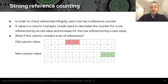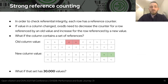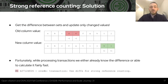The next topic is referential integrity, specifically strong references. For them it's enough to keep a reference counter per row. If a reference value changes, OVSDB decreases the counter for the old referenced row and increases it for the new one. If the column contains a set of references, it decreases the counter for all references in the old version of the set and then increases for all references in the new version. This is inefficient when a set has many values but only a few changed. The solution is to get the difference between sets and update only the changed references — which is what change number 6 implements.